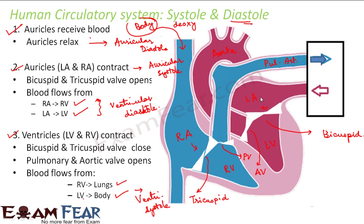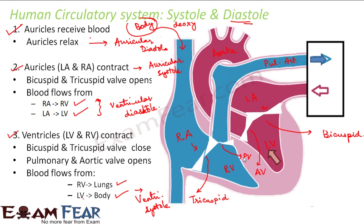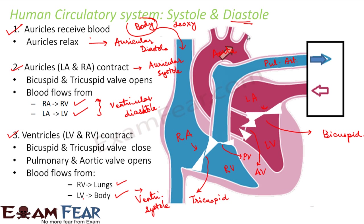The same process happens on the left side. Blood first enters the left auricle. When the bicuspid valve opens, it flows from the left auricle to the left ventricle, then the bicuspid valve closes. The ventricles start contracting because they are filled with blood. The aortic valve opens, and this blood flows through the aorta to different parts of the body.